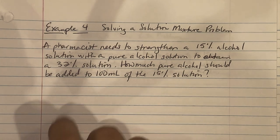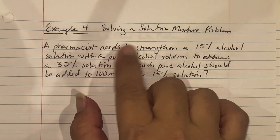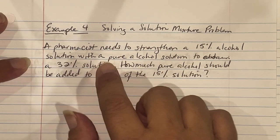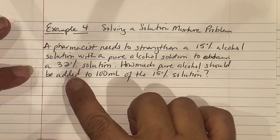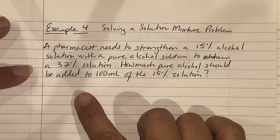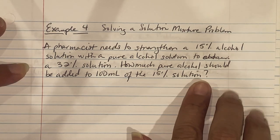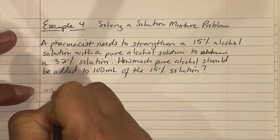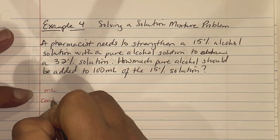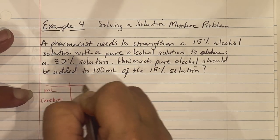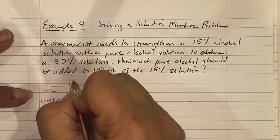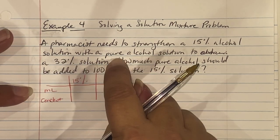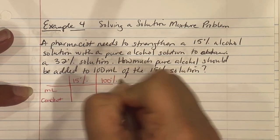Example 4, solving a solution mixture problem. A pharmacist needs to strengthen a 15% alcohol solution with a pure alcohol solution to obtain a 32% solution. How much pure alcohol should be added to 100 mL of the 15% solution? Again, we're going to use a table of values. So we have our mL and we have our concentration. They told you you're taking a 15% solution and mixing it with pure alcohol. When they're talking about pure alcohol, we're looking at it at 100%. And then we're yielding a 32% solution.